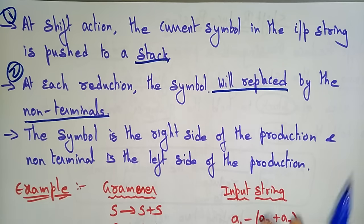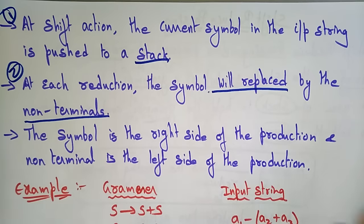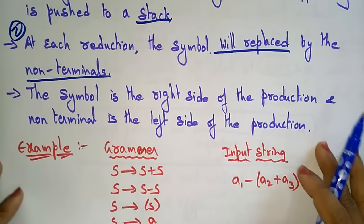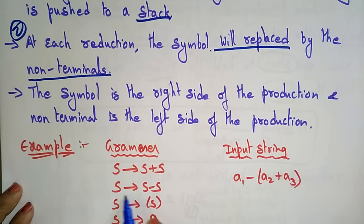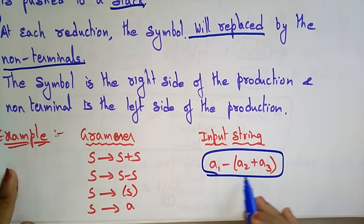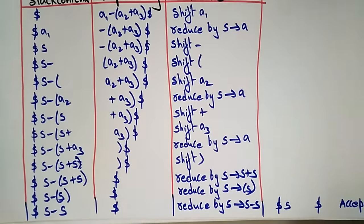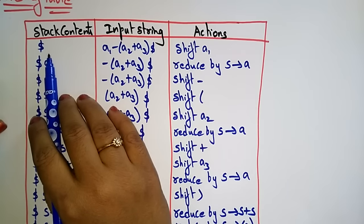This concept will be better understood by taking an example. Whenever you solve a shift-reduce parsing problem, write the concept and then solve the example — the theory part will follow automatically. Let's take this grammar: S → S plus S, S → S minus S, S → S, and S → a. The input string we are taking is: a1 minus a2 plus a3.